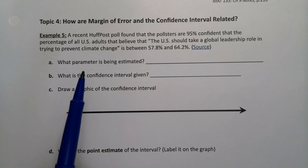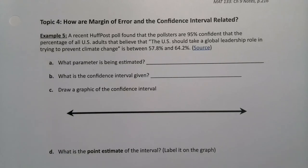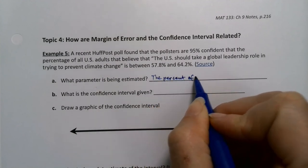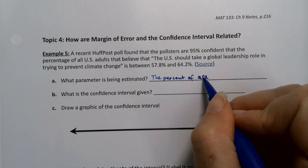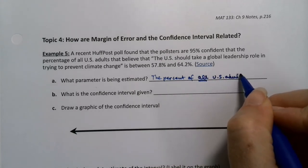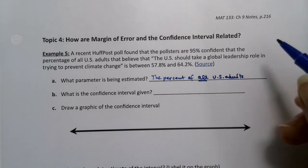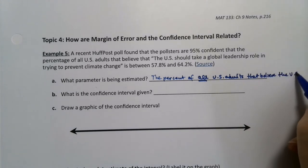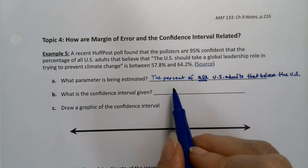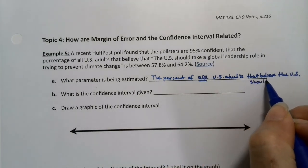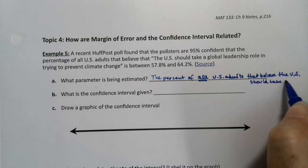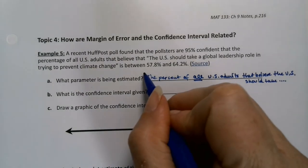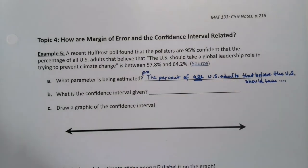Now let's get some review questions in there. What is the parameter being estimated? So it's the percent of all U.S. adults that would say, or that believe the U.S. should take global leadership. So it's P, the population proportion.